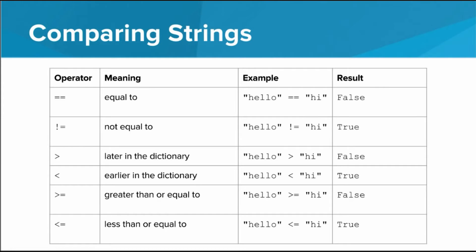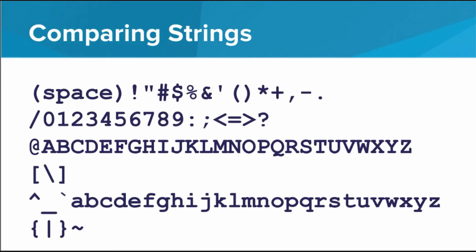I want to talk about how each of the operators we saw in this lesson can also be used to compare two strings. Equal to and not equal to are pretty self-explanatory. Greater than and less than require a bit of explanation. Basically, string 1 is less than string 2 if it would appear earlier in the dictionary. This is a little tricky, because strings can have more than just letters. Here's a semi-complete list of characters that can occur in strings, in the order that Python considers them. Do make note of the fact that digits all come before letters, and all the capital letters come before all the lowercase ones.